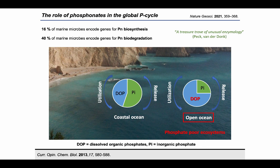Nowadays, we know that the use of phosphonates as a phosphorus source is not an ecological niche of lower environmental importance, as was thought for many years — it is a very important part of the global phosphorus cycle. Especially in ecosystems that are naturally depleted in phosphate, like most of the oceans, phosphonates play a crucial role. Compounds called DOPs — dissolved organic phosphorus compounds — make up very large amounts of the total available phosphorus, especially in phosphate-poor open ocean ecosystems. Metagenomic screenings of whole marine DNA libraries showed about 16% of all marine microbes encode genes for phosphonate biosynthesis, and even 40% encode genes for phosphonate biodegradation.